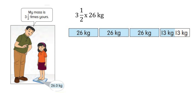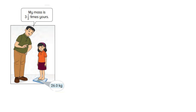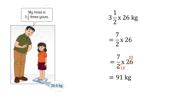And half of 26 is 13, so we'll have 13 kilograms. Now add them up: three multiplied by 26, plus 13. We will have 91 kilograms.